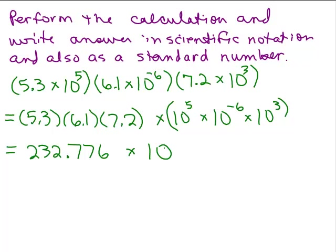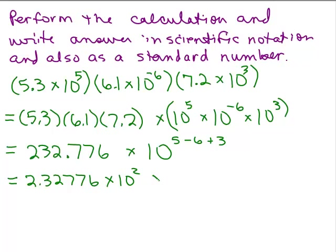Using a calculator, the three numbers multiplied out give 232.776. Then we add the exponents: 5 plus negative 6 plus 3. Now I need to write 232.776 in scientific notation — that's 2.32776 times 10 squared, since 232 is not 2.32. Then 5 minus 6 plus 3 is also 2, so that's another 10 squared. Applying laws of exponents, 10 squared times 10 squared is 10 to the 4th. So the answer in scientific notation is 2.32776 times 10 to the 4th.